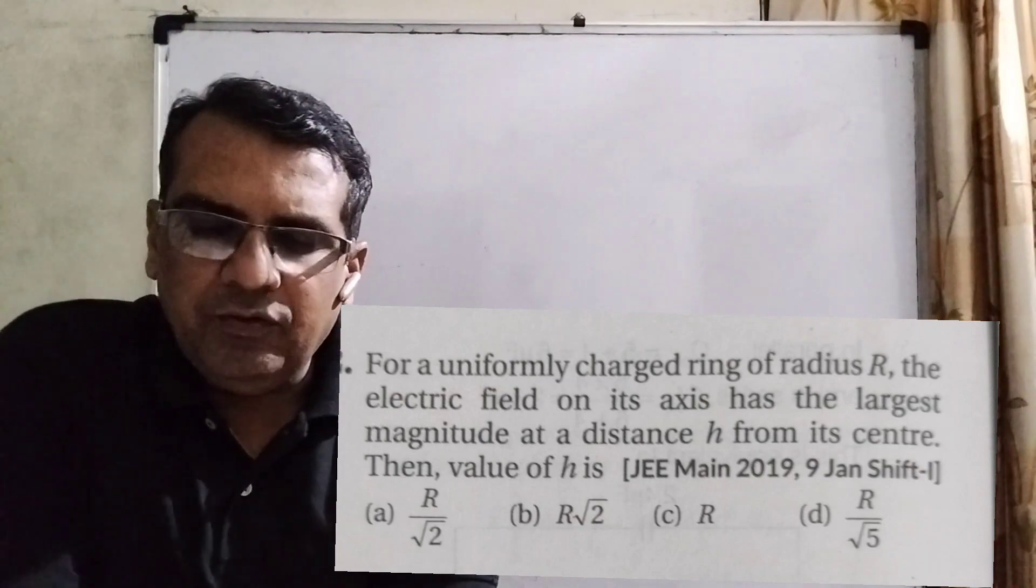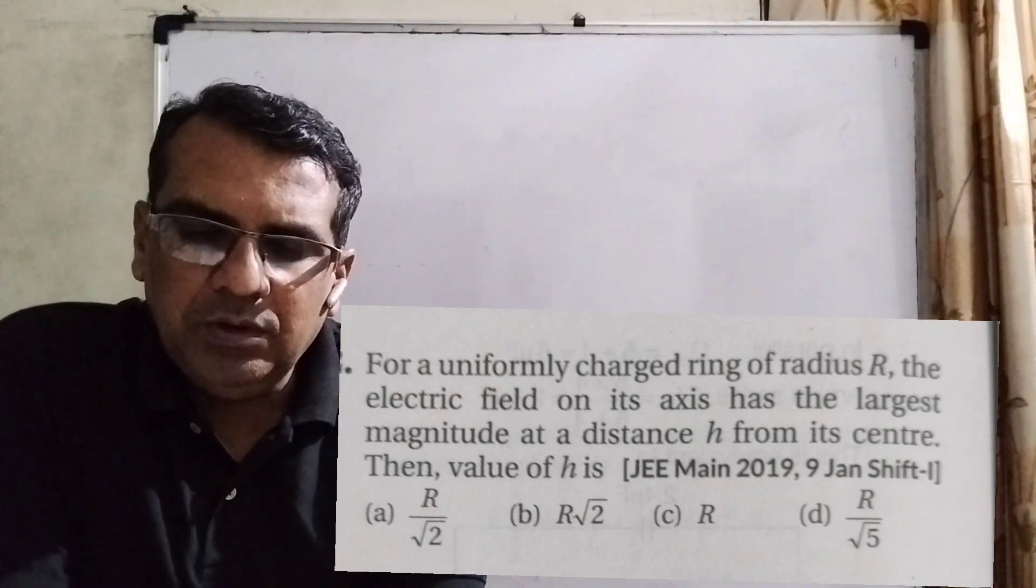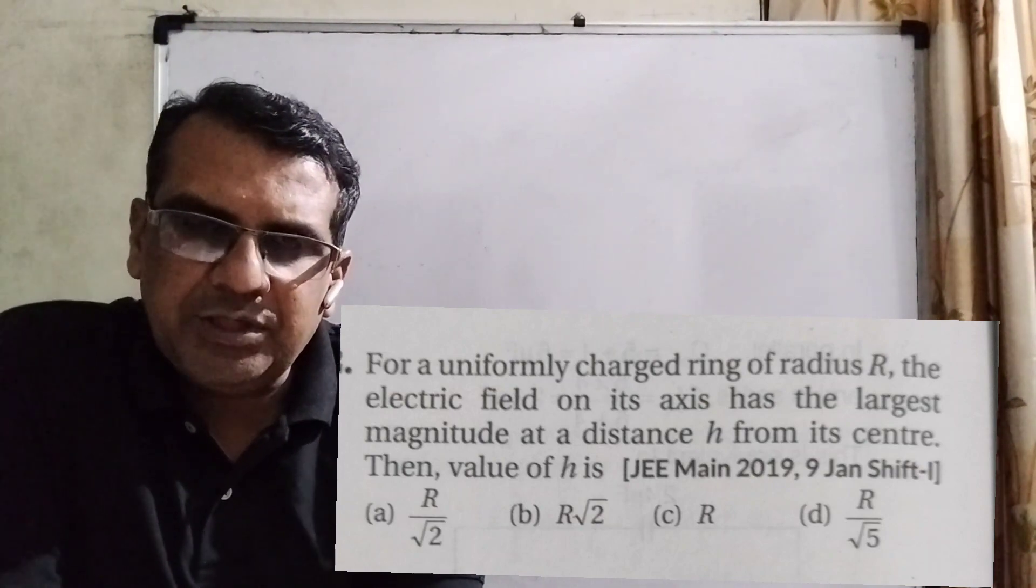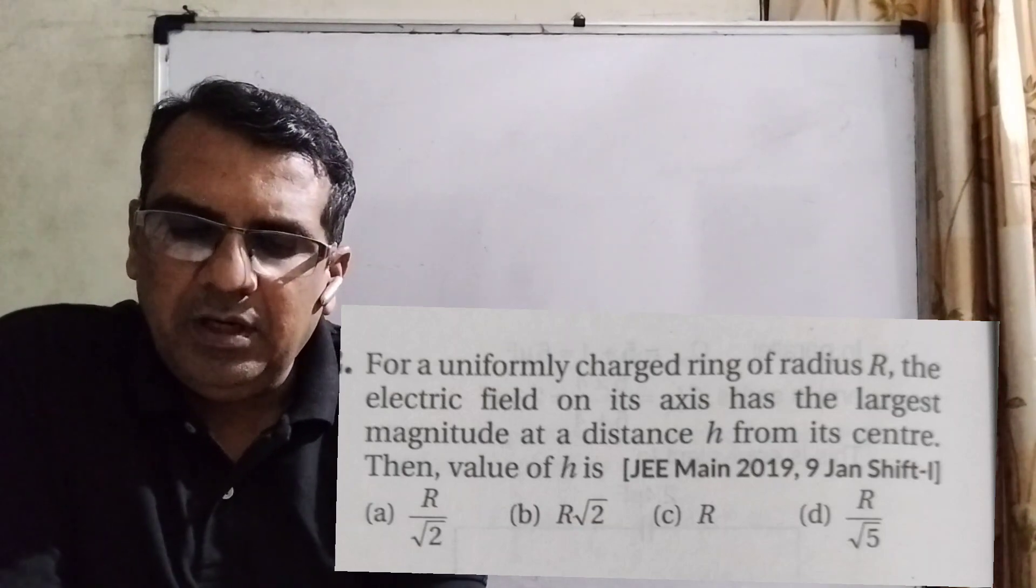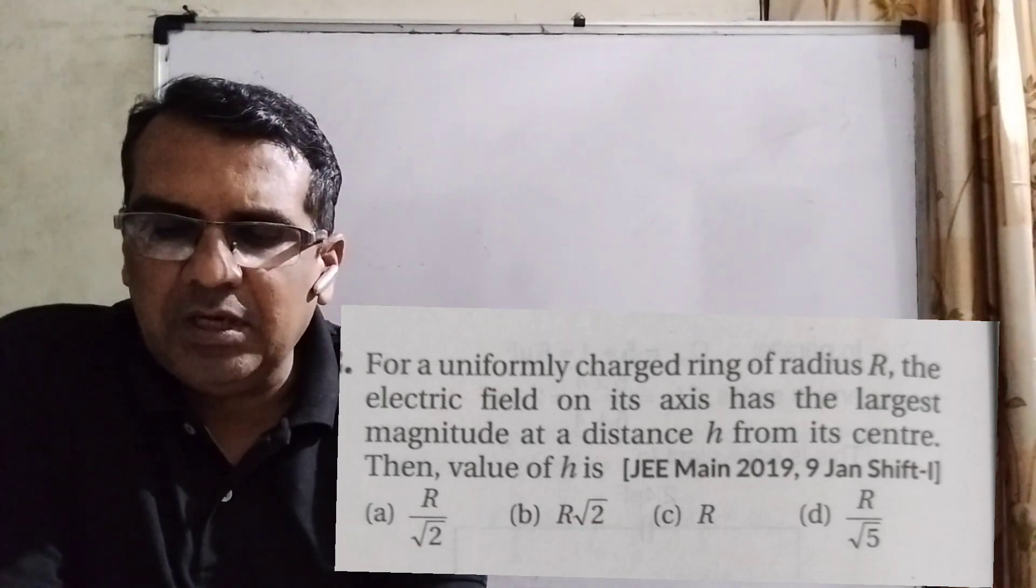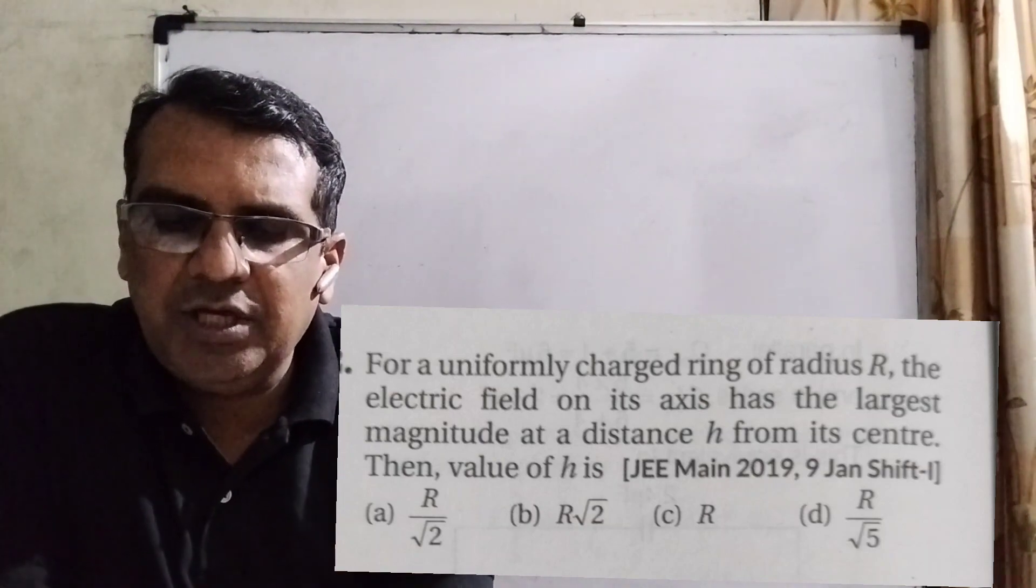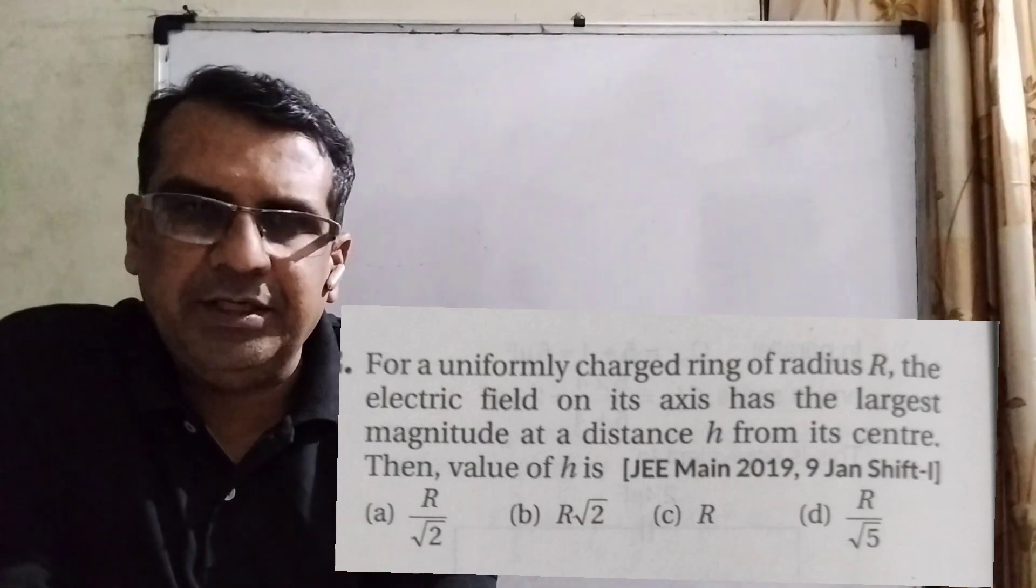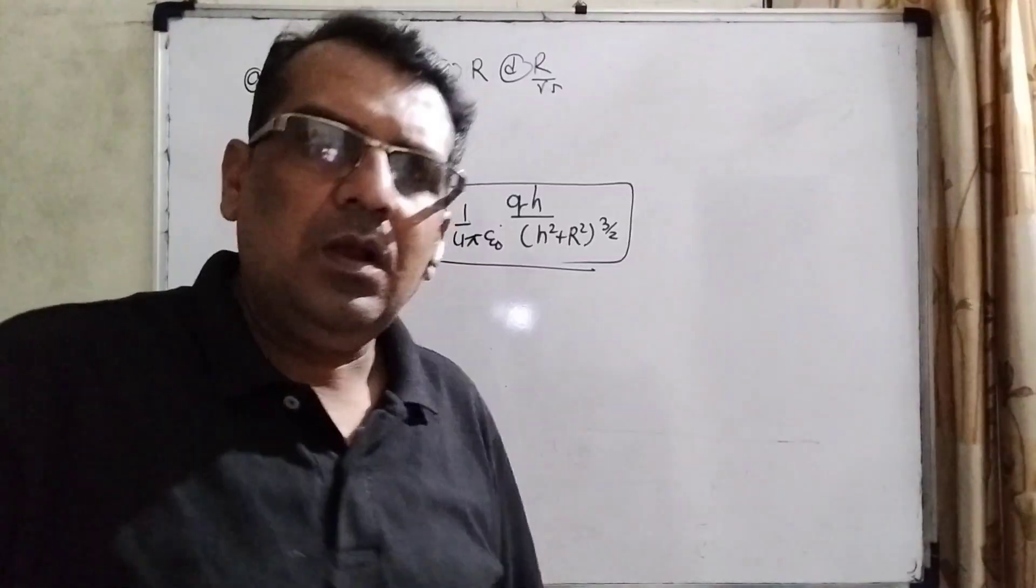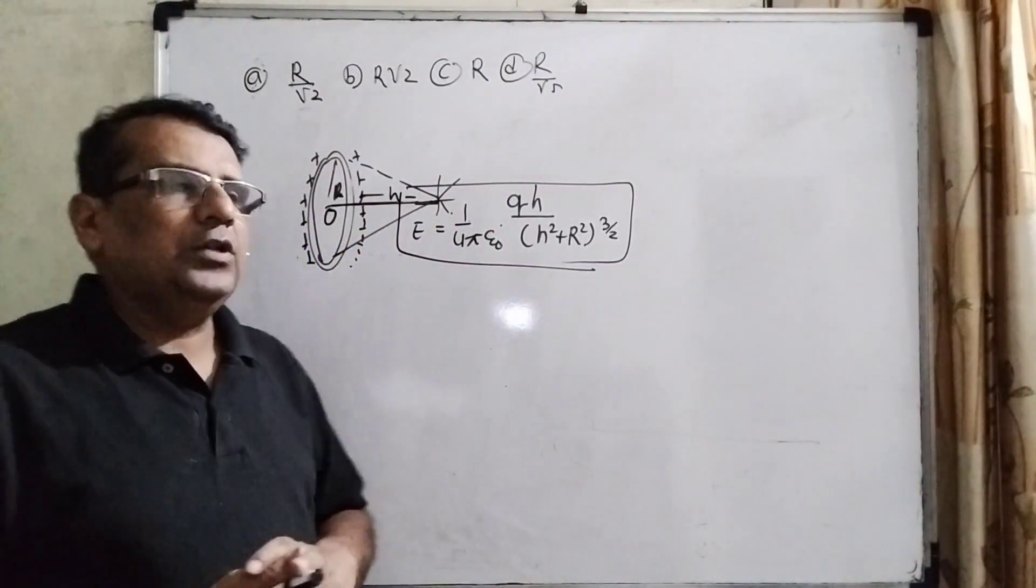You have given four options: r by root 2, second option r by root 2, third option r, and last option d is r by root 5. This question is asked in JEE Mains 2019.